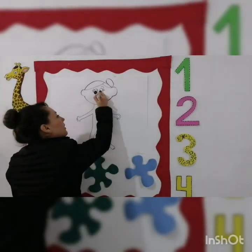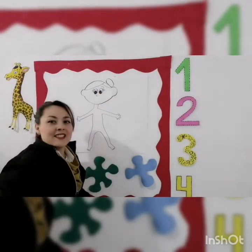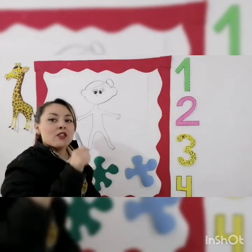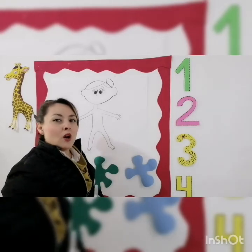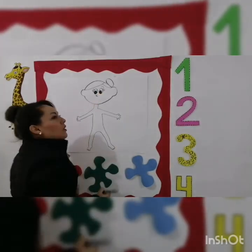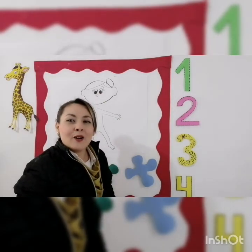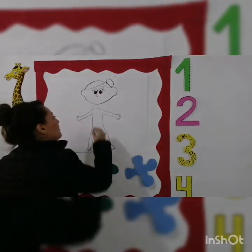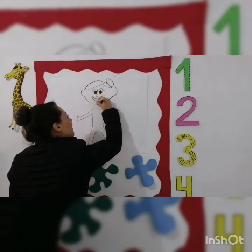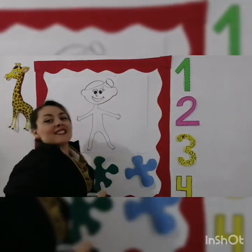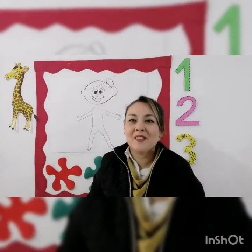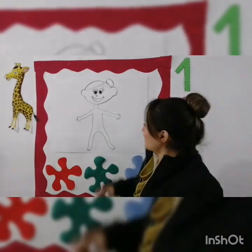Ahora voy a dibujar mi nariz. ¿Es pequeña o es grande su naricita? My nose. ¿Ya dibujaron su nose, su nariz? Ahora vamos a dibujar nuestra mouth, nuestra boquita. Ahí está my mouth. ¿Ya la dibujaron? Very good. Muy bien. Y aquí estoy yo.